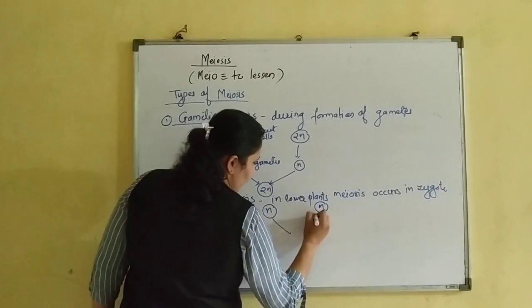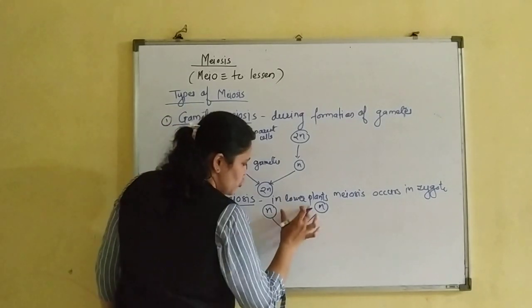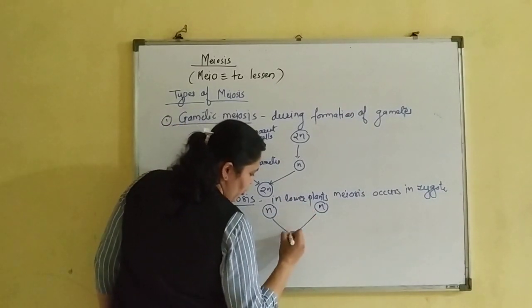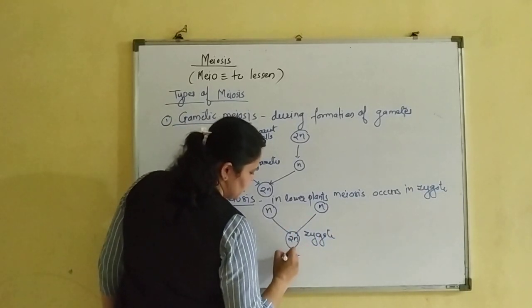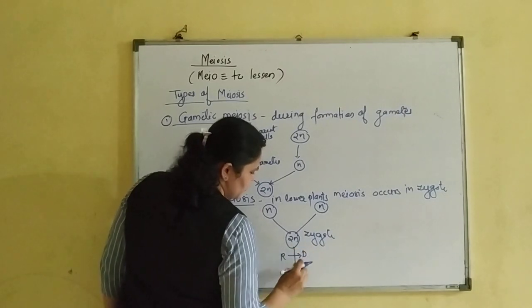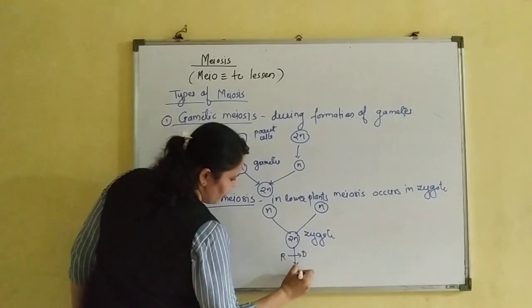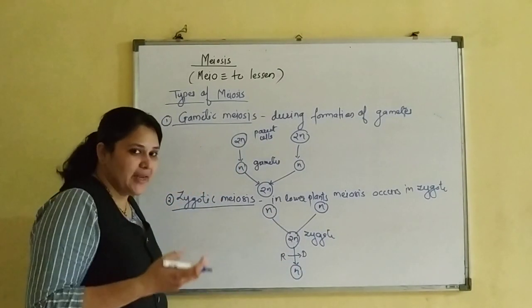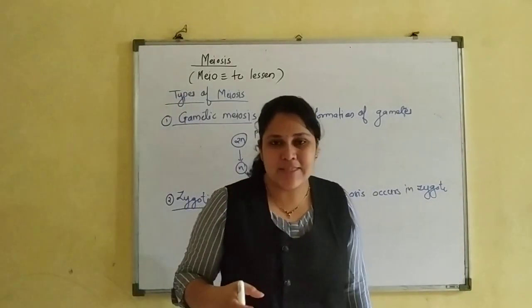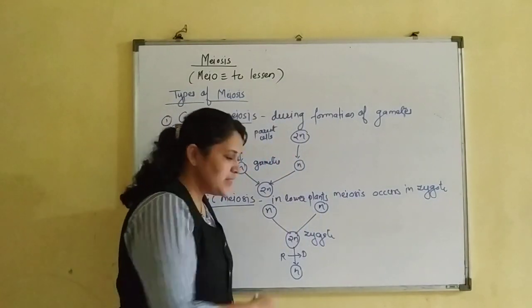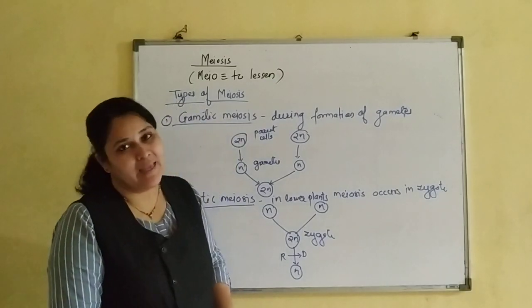In zygotic meiosis, meiosis occurs in the zygote in lower plants. The zygote or the diploid phase is of shorter duration. The main plant body is haploid. Gametes are also formed by mitosis. Whenever these two gametes fuse, a diploid zygote is produced. This zygote undergoes reductional division, which results in formation of haploid cells. These haploid cells continue to follow mitotic cell division because the main body is haploid. Such organisms are said to have a haplontic life cycle.